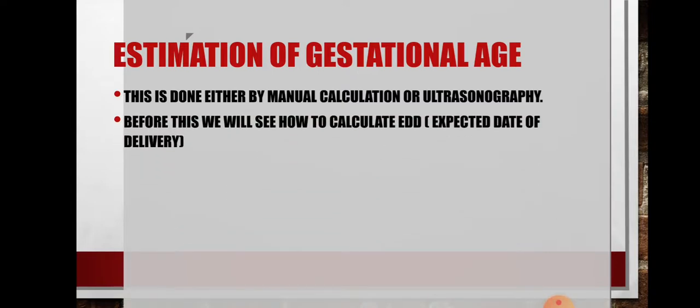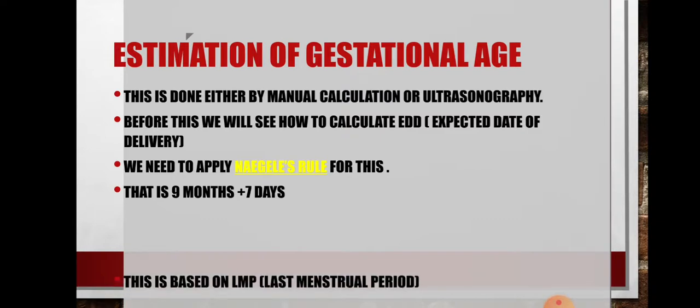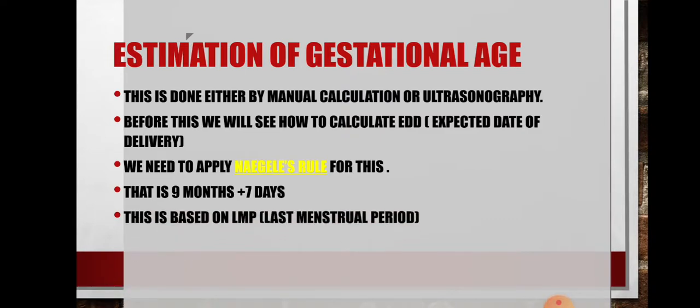Before this, we will see how to calculate EDD, that is the Expected Date of Delivery. We need to apply Nagel's rule here. According to Nagel's rule, for months we add plus 9 and for days we add plus 7. This is based on LMP, that is Last Menstrual Period. When a female comes with a missed period, we always ask for her last menstrual period date, and according to that we calculate the EDD if she is pregnant.